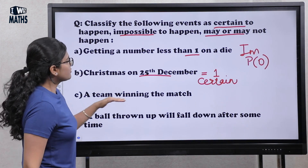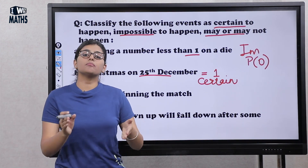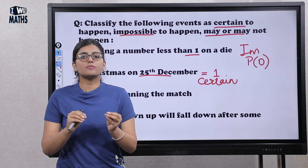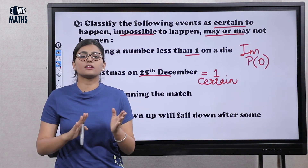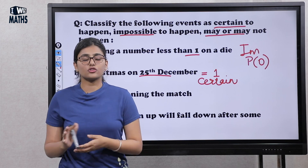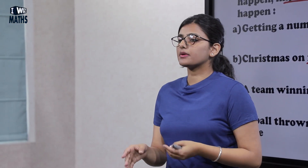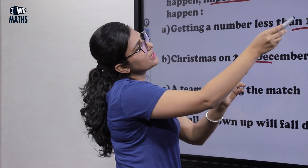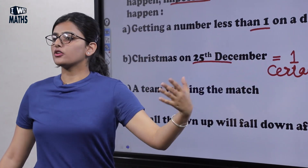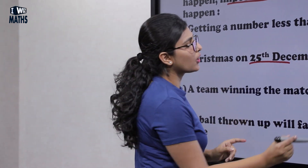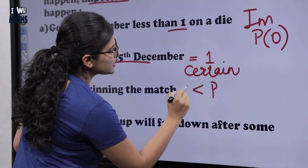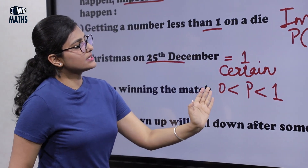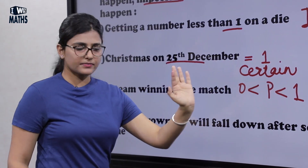The next is a team winning a match. A team may or may not win a match. When all factors are constant and there is no bias, a team can win or not. So this may or may not happen. When an event may or may not happen, the probability is between zero and one, so we write its probability as between 0 and 1.